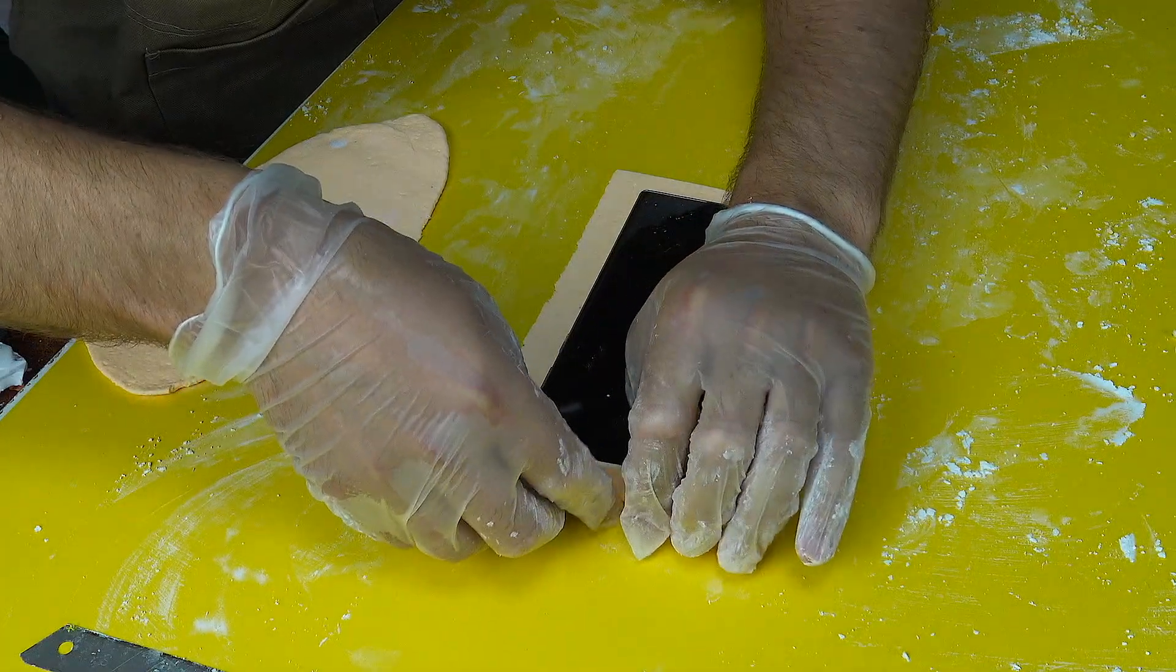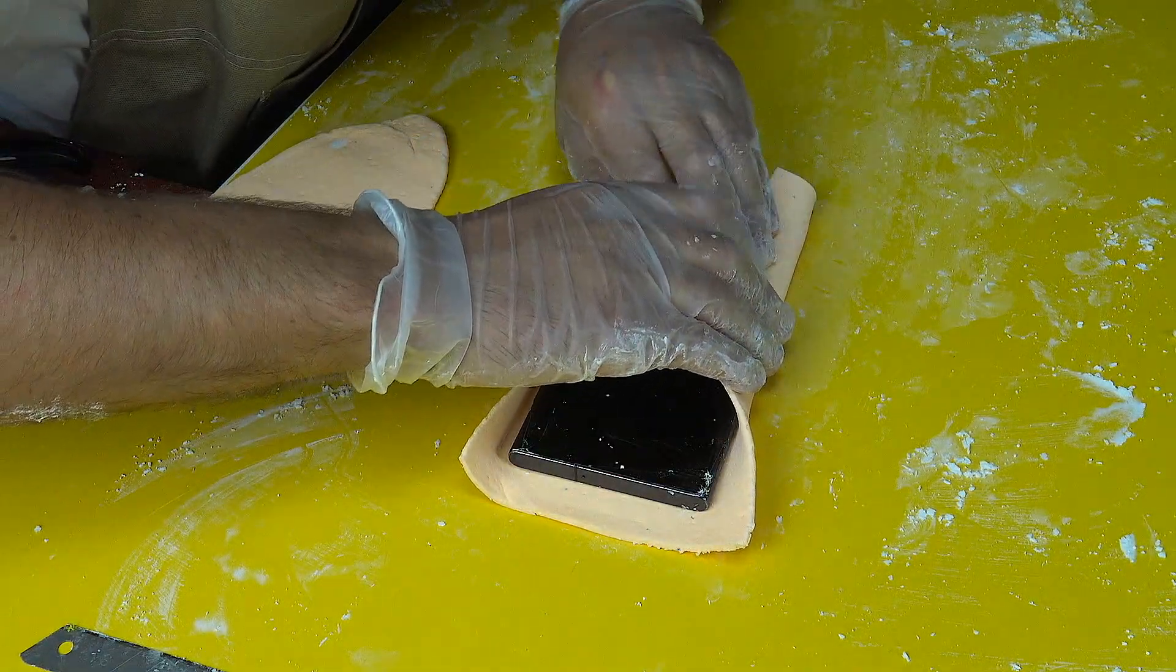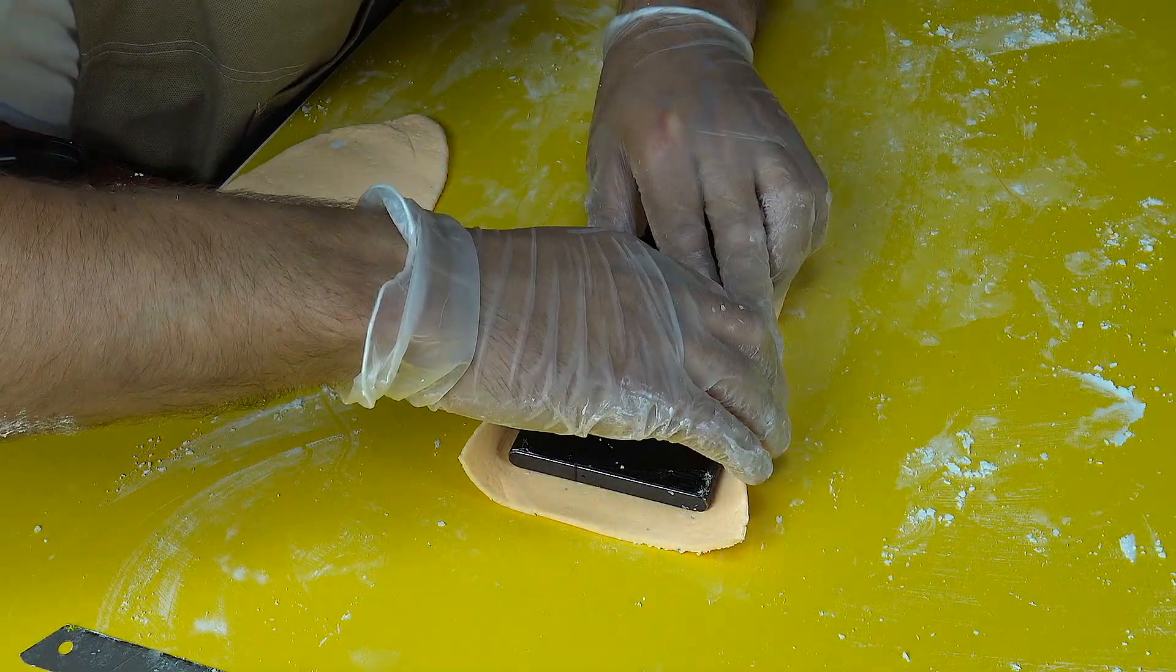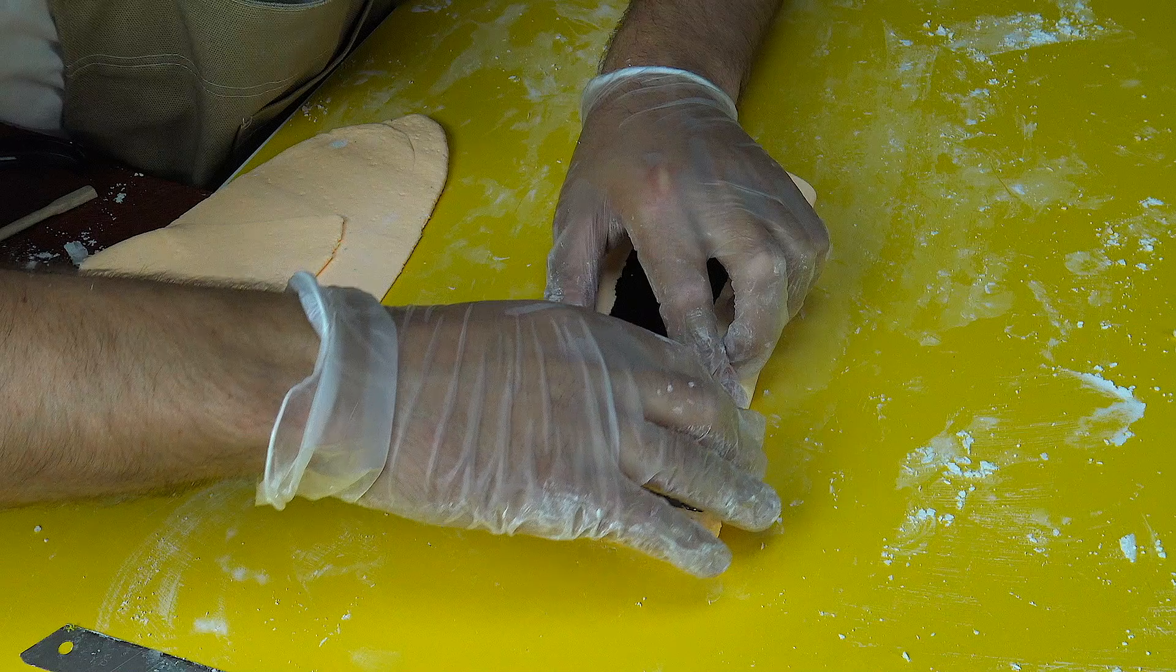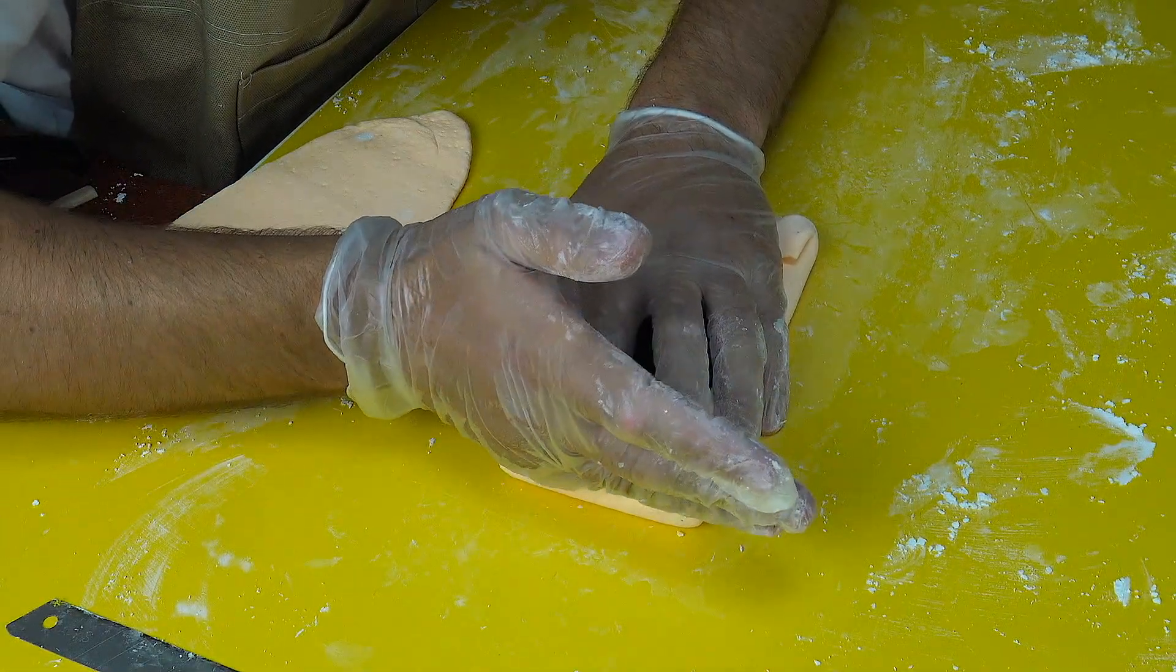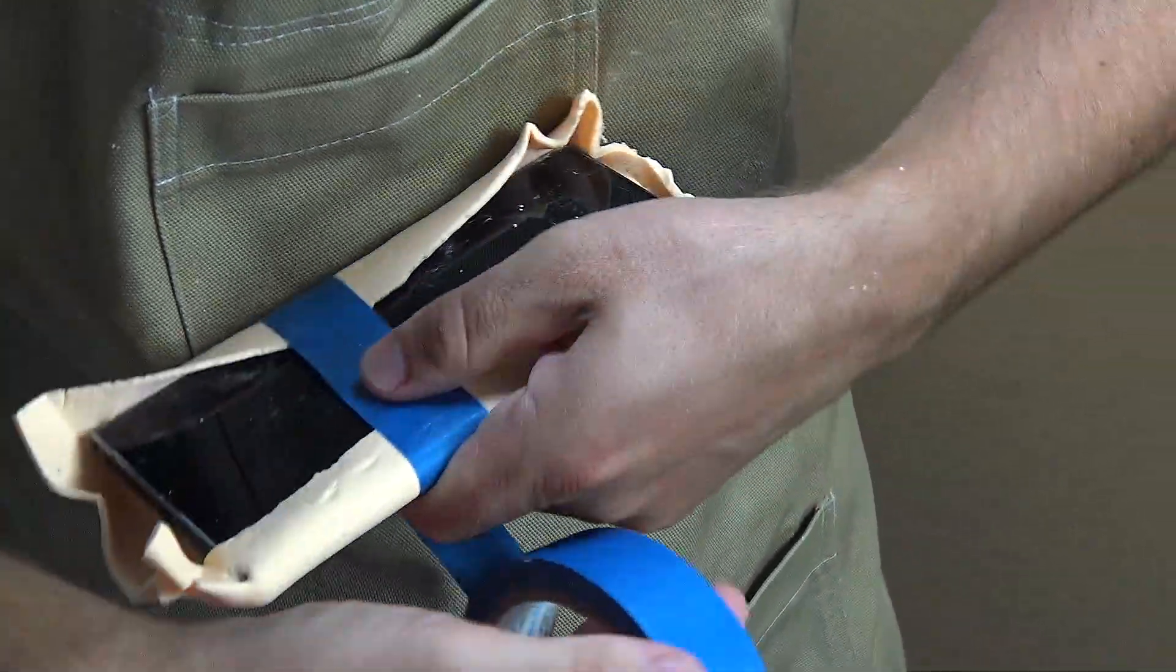This approach combines hands-on engineering with a real scientific experiment. We observe the material's behavior: elasticity, thickness distribution, and its ability to reproduce shapes accurately. All this information is crucial for optimizing the future aluminum press mold, ensuring that the final product meets strict engineering standards and looks flawless.